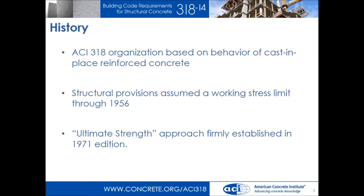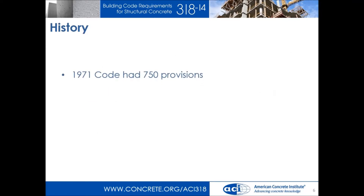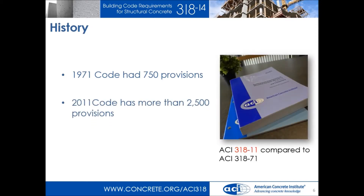It wasn't until 1971 that we fully went over to an ultimate strength approach. At that point we started with 14 pages back in 1910, and by 1971 we were up to about 78 pages — roughly 750 provisions. Moving forward into 2011, we're now at 2,500 provisions plus, which is 503 pages. We've gone from working stress to ultimate strength design, and added a significant amount of information.